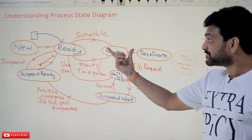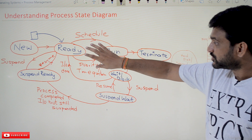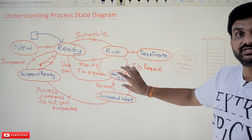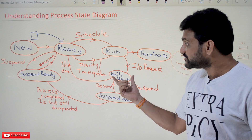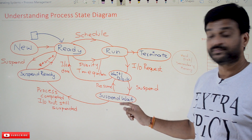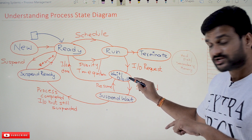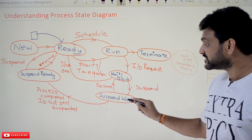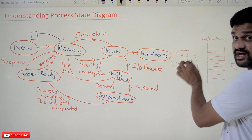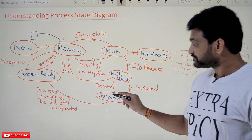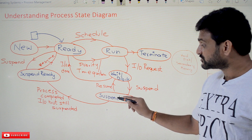Now if a process is waiting for the longest period of time and other processes also want to get shifted into the wait or block state but there is no room in the wait or block state, then it will get shifted to the suspend wait state. The suspend wait state is there on the hard disk. As and when the IO operation is done, it will get resumed back to the wait or block state.